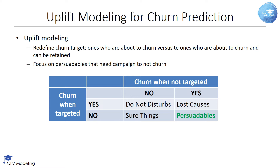The lost causes are the ones that churn anyway, whether targeted or not. The sure things are the ones that will not churn, even when not targeted. Hence, it's lost money targeting them.